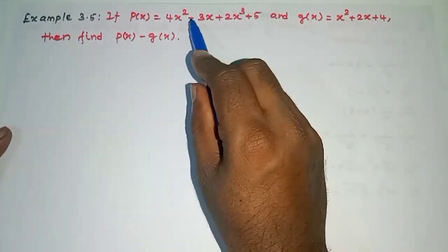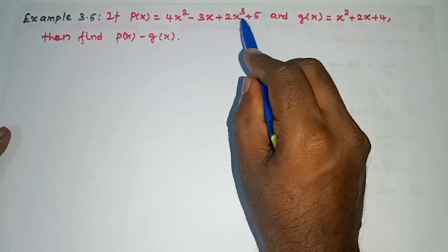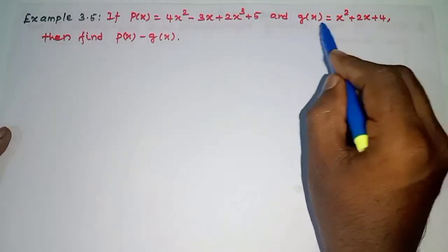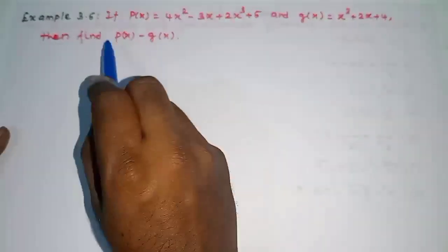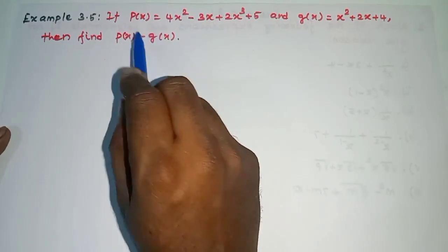If P of x is equal to 4x square minus 3x plus 2x cube plus 5 and G of x is equal to x square plus 2x plus 4, then find P of x minus Q of x.